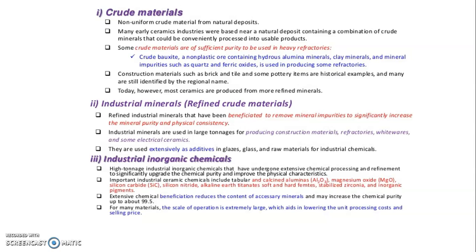Industrial inorganic chemicals are highly refined industrial chemicals that have undergone extensive chemical processing and refinement to significantly upgrade the chemical purity. Examples include calcium aluminate, magnesium aluminate, silicon carbide, silicon nitride, alkaline titanates, and soft and hard ferrites. These are used for industrial inorganic chemical applications.